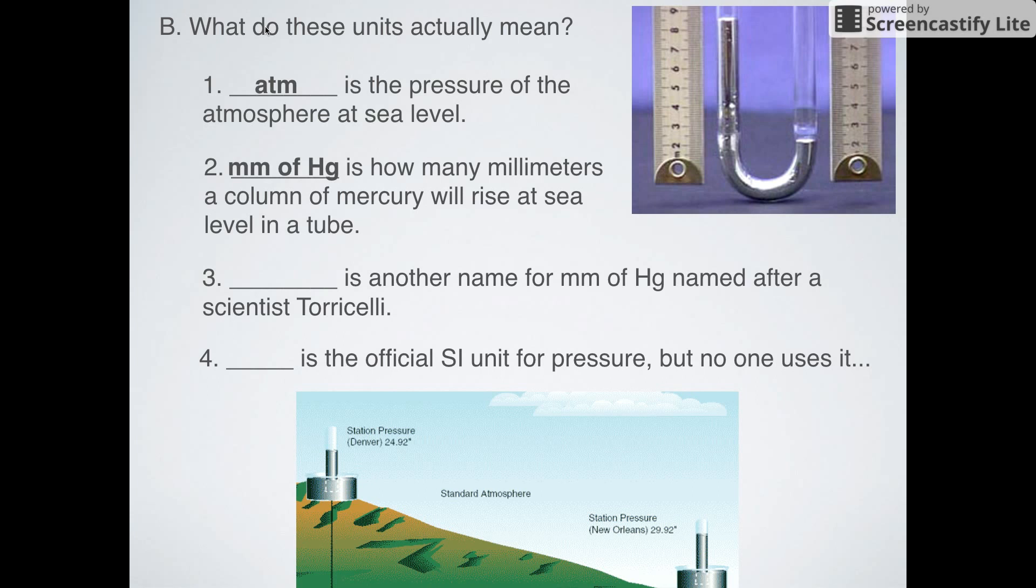Millimeters of mercury is just if you had a column of mercury at sea level, how many millimeters of mercury that column would rise up at sea level. It just so happens to be 760 millimeters worth. Torr is another name for millimeters of mercury, but it's named after a different scientist, Torricelli. And then kPa, like I said, is the official SI unit for pressure, but no one really ever uses kPa. We'll use it, but no one else really ever gets a chance to really make it shine.